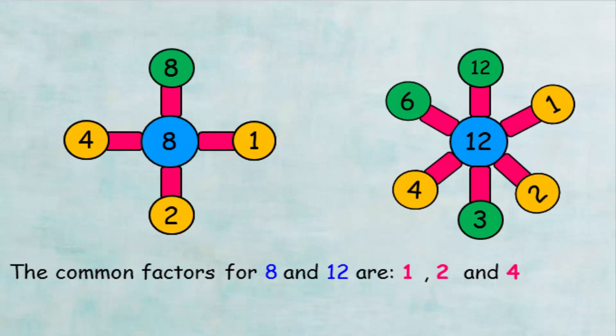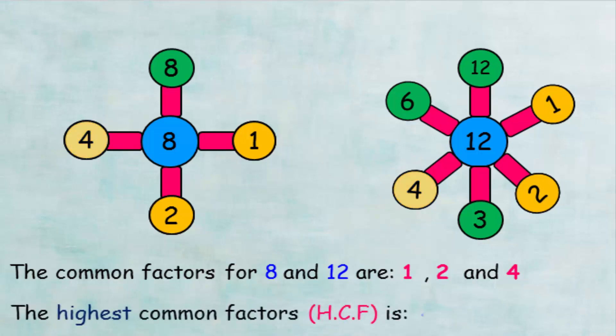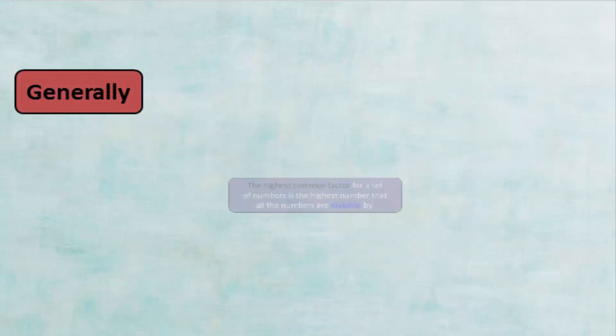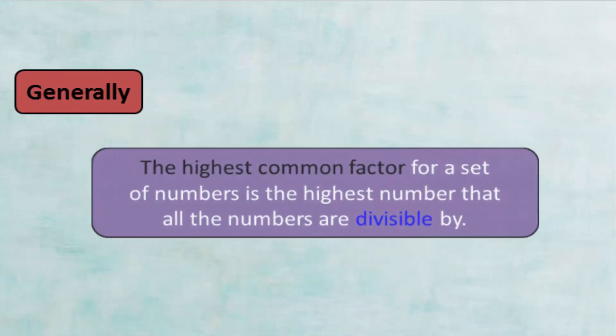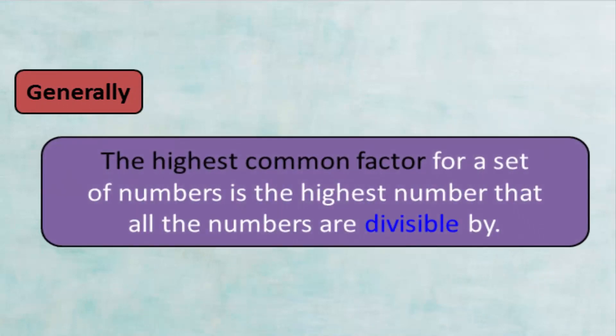At the same time, the highest common factor between these two numbers is 4, because the number 4 is the highest divisor of the numbers 8 and 12. And it is denoted by the symbol HCF. The highest common factor for a set of numbers is the highest number that all the numbers are divisible by.